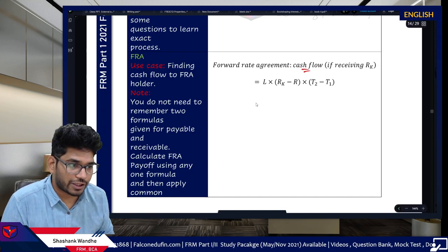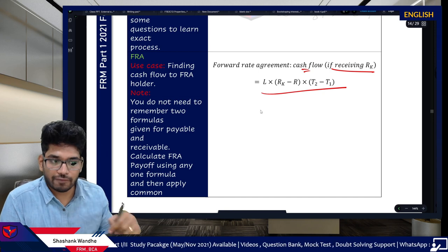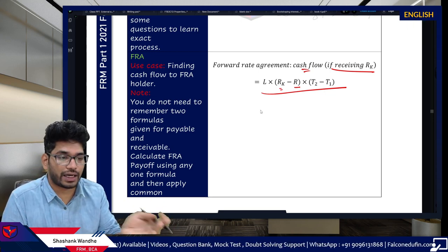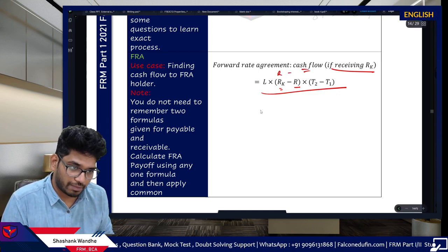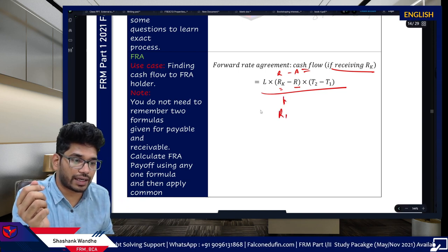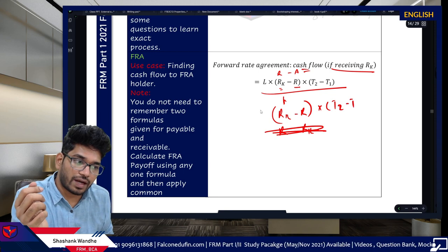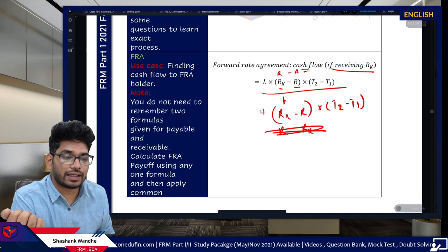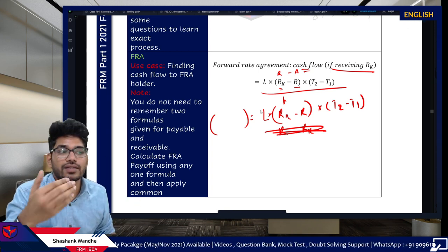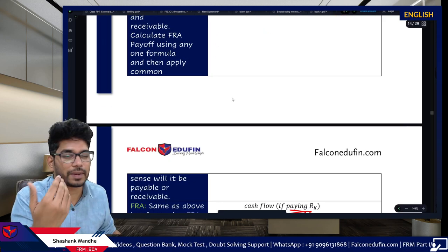For Forward Rate Agreements (FRAs): the cash flow formula uses L × (RK - R) — where L is the notional principal, RK is the agreed rate, and R is the actual rate. My recommendation: forget whether to use RK - R or R - RK. Just calculate the absolute difference and then think logically — is the rate you are supposed to receive greater or less than the actual rate? Decide the sign based on that reasoning.